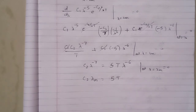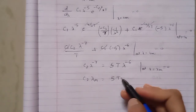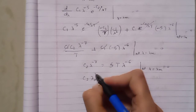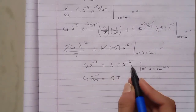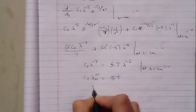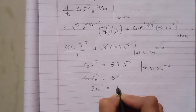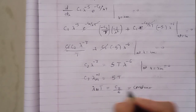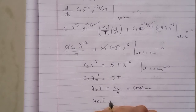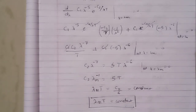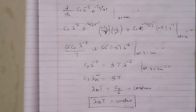This simplifies to C2 times lambda raised to minus 1 equals 5T, so lambda_m times T equals C2 upon 5. Since C2 upon 5 is a new constant, we get lambda_m times T equals constant, which is nothing but Wien's displacement law. Hence we have deduced Wien's displacement law from Planck's law. Proved.